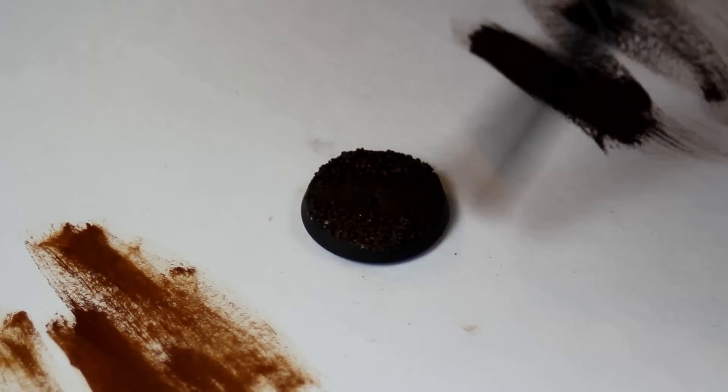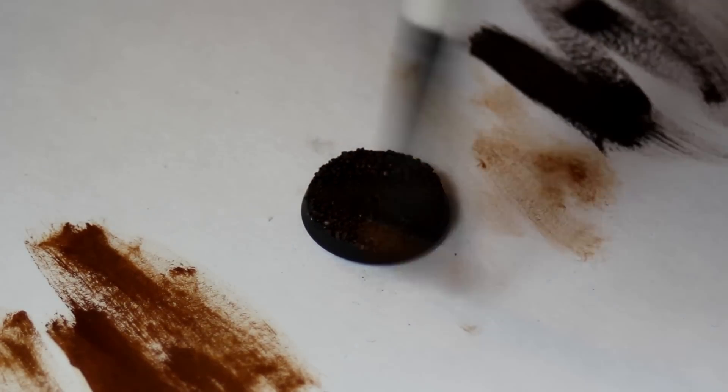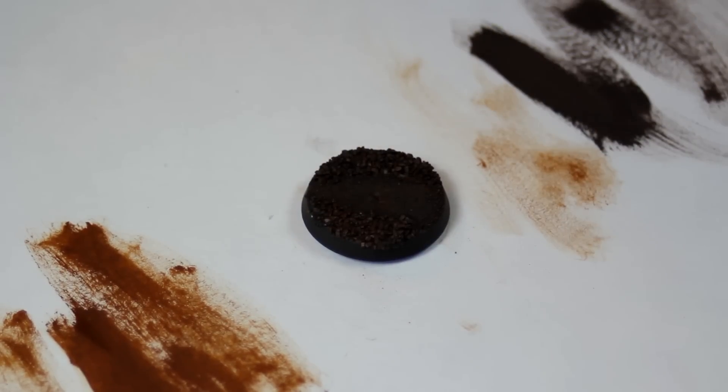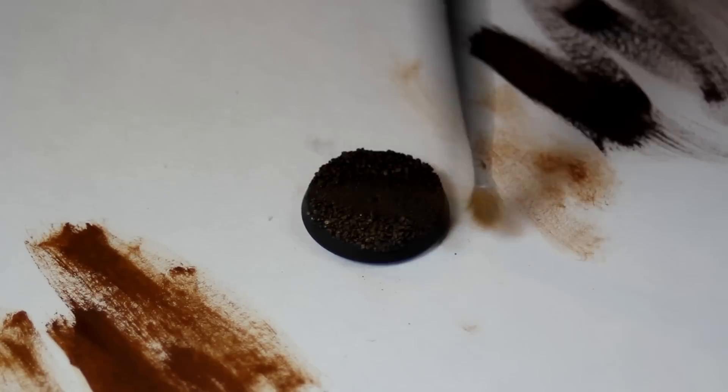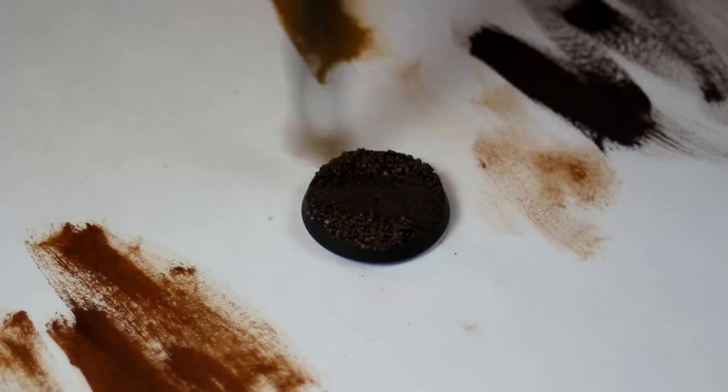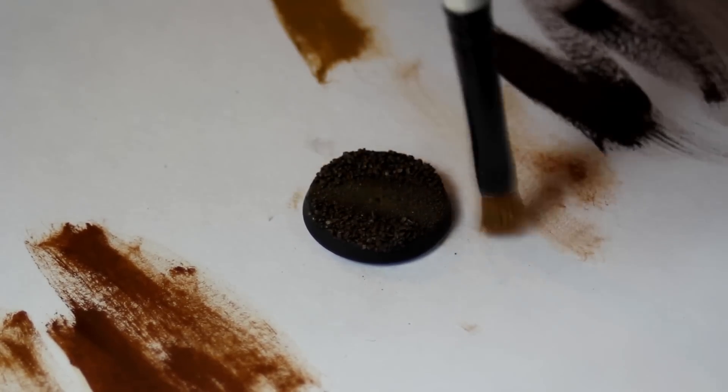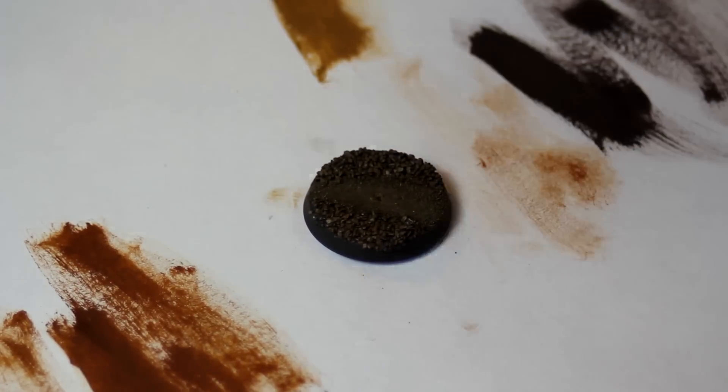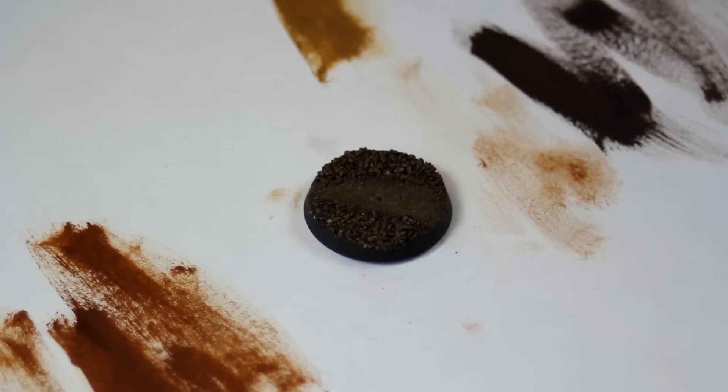Next I went in with Vallejo Game Color Beastie Brown. I did a pretty big dry brushing with that color. And then I went in with Vallejo Game Color Leather Brown. Definitely trying to get this color more towards the middle of where the small grain sand is.